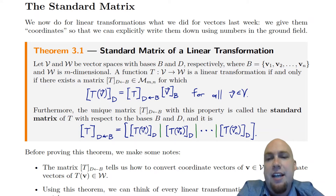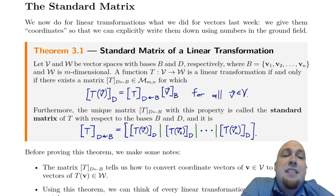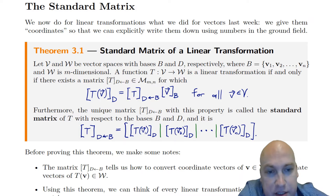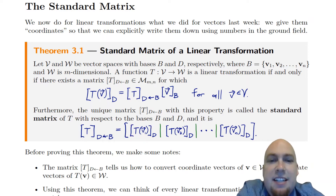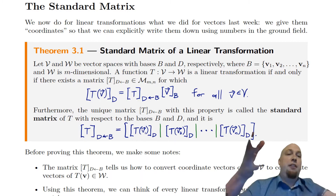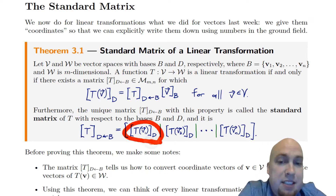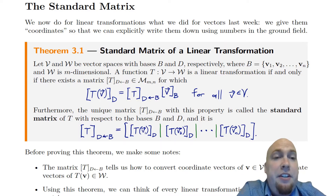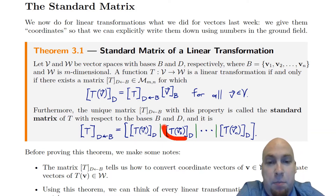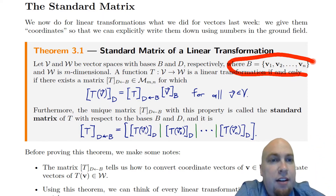It's like change of basis matrices just because T is sending V into W — it has to send the basis B of V into the basis D of W. The way it's constructed is very similar to change of basis matrices. Here's the formula: you apply the linear transformation T to each of the basis vectors from the input basis B, and then you represent that in the output basis D. That's your first column. The second column comes from applying T to V2 and representing it in the output basis, and so on — you get one column from each input basis vector.